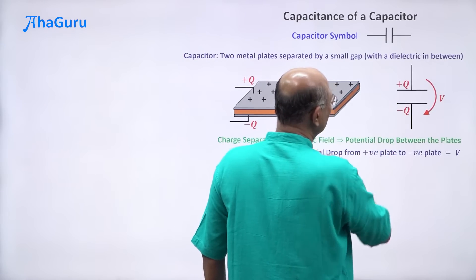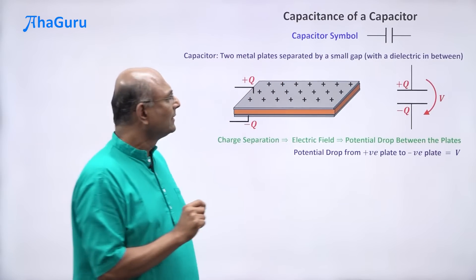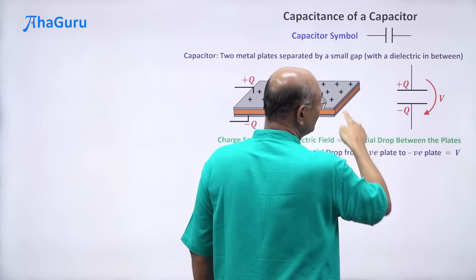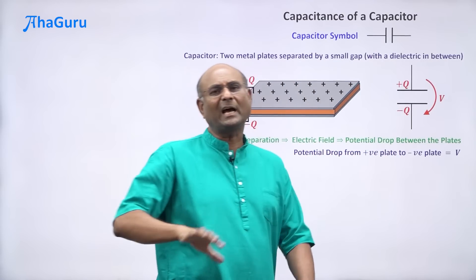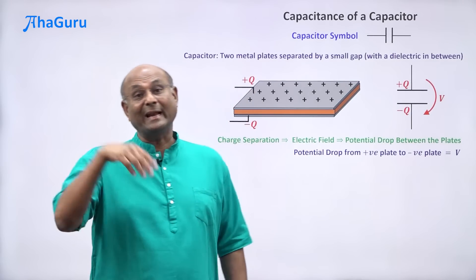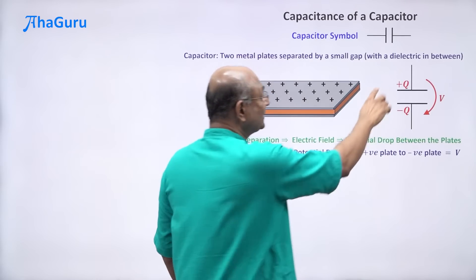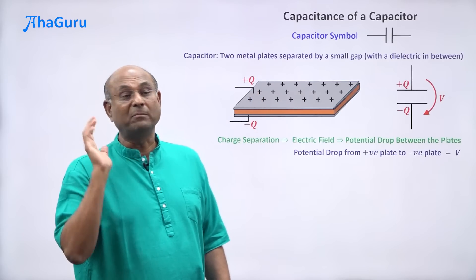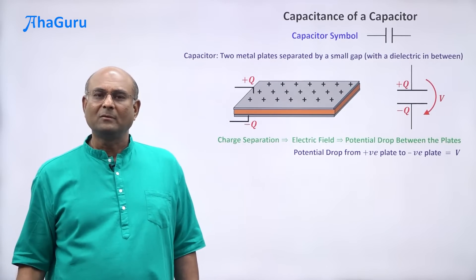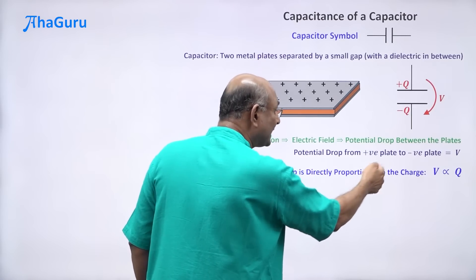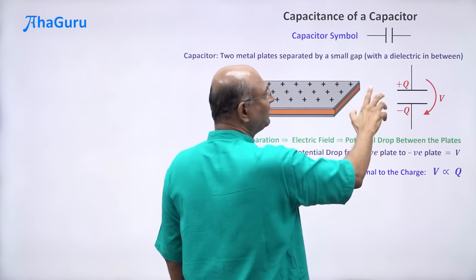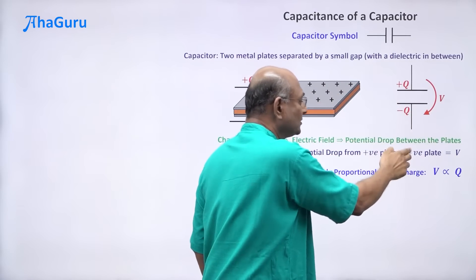V must be related to Q because Q produces the electric fields and the electric fields produce the potential drop. Suppose I doubled Q — everywhere the charge doubles, so the electric field doubles everywhere. Since potential drop is proportional to electric field, the potential drop will also double. Doubling Q doubles V; tripling Q triples V. So V is directly proportional to Q.